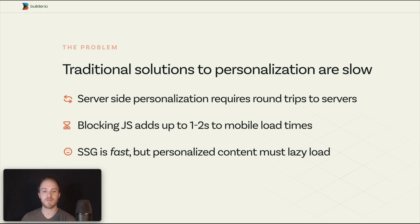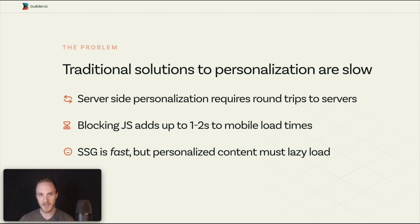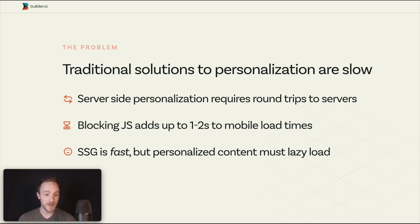In a lot of cases, blocking JavaScript will then prevent the page from being visible, pulling in personalizations or other information. Now that's quite slow. We want to have fast pages that are immediately visible and personalized. And so what we really want is static generation — it's fast, but everybody sees the same content.